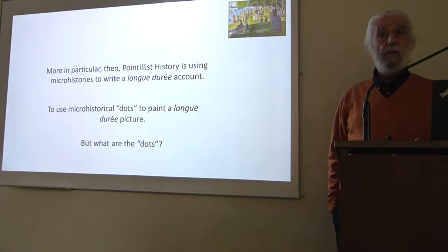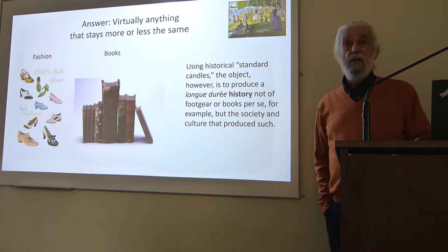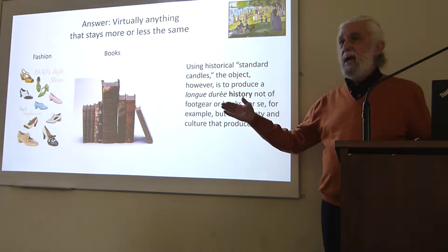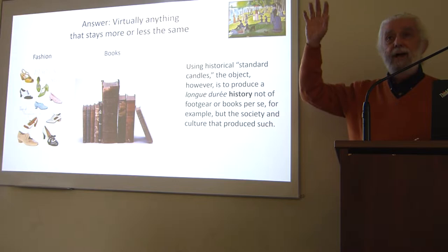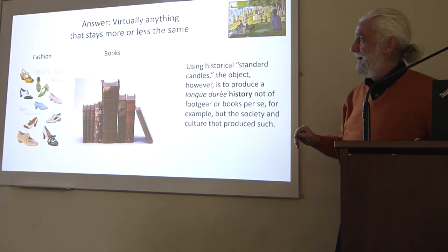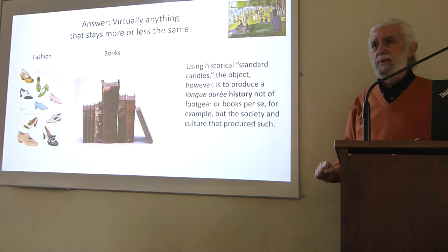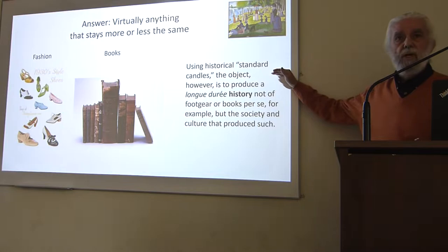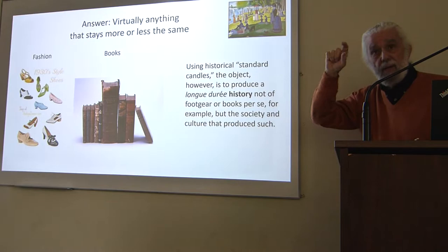The question becomes: what are the dots? The answer is virtually anything that's going to remain more or less the same over a lengthy period of time. I could imagine a neat history of footgear that goes from Ötzi the Iceman down to Manolo Blahnik. Books also perform this — the history of the book is a separate subfield. The key is to have what I'm calling 'standard candles,' a term from astronomy: something that stays the same, which will be our micro-dots.